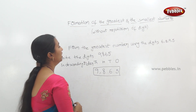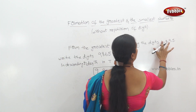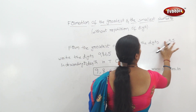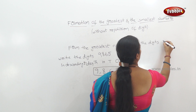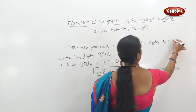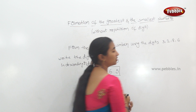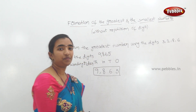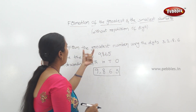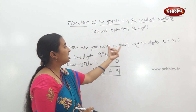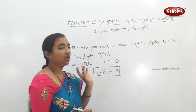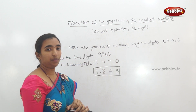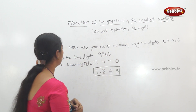Now let's take a different example. The digits are 3, 2, 8, and 6. Form the greatest number using these digits without repetition of the digit.